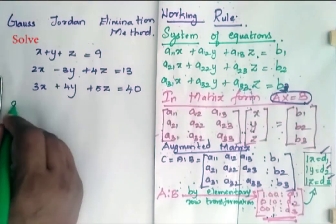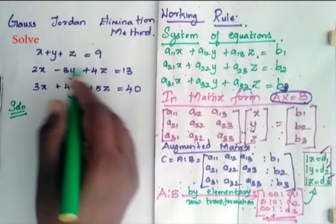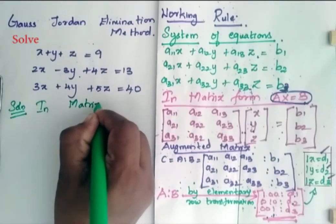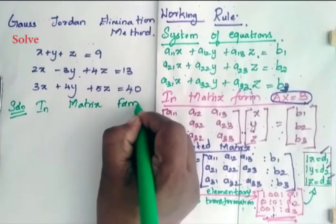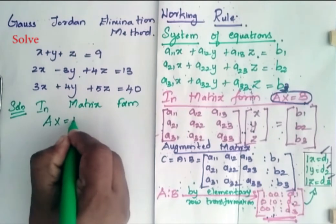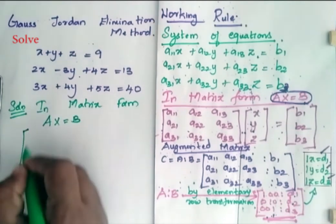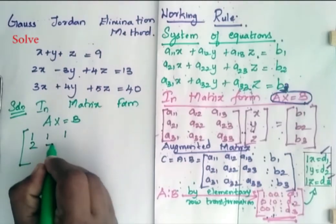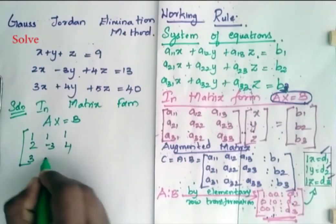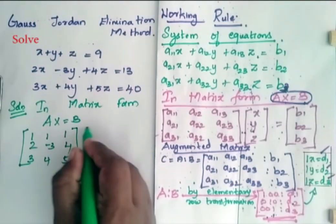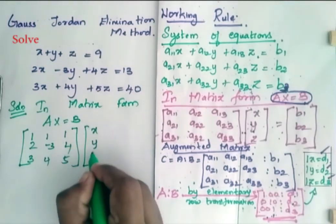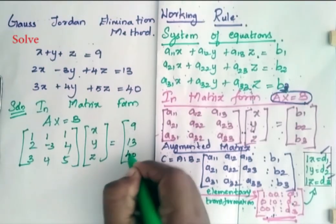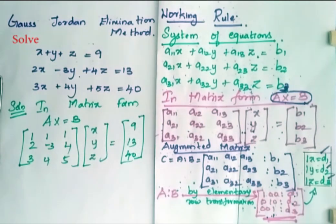Now for the solution, first we have to represent the equations in matrix form, so A·x = b. Representing this, we have the coefficient matrix as [1, 1, 1; 2, -3, 4; 3, 4, 5], the variable vector [x, y, z], and this is equal to [9, 13, 40].